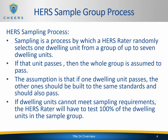What is sampling? Sampling is a process by which a HERS rater randomly selects one dwelling unit from a group of up to seven dwelling units. They're going to test that house, and if that house or unit passes, then the whole group is assumed to pass. The assumption is that if one dwelling unit passes, and this is after the installing contractor has already tested all homes, you as a HERS rater are just verifying their test results. If one dwelling unit passes, then the other ones should be built to the same standards and should also pass.